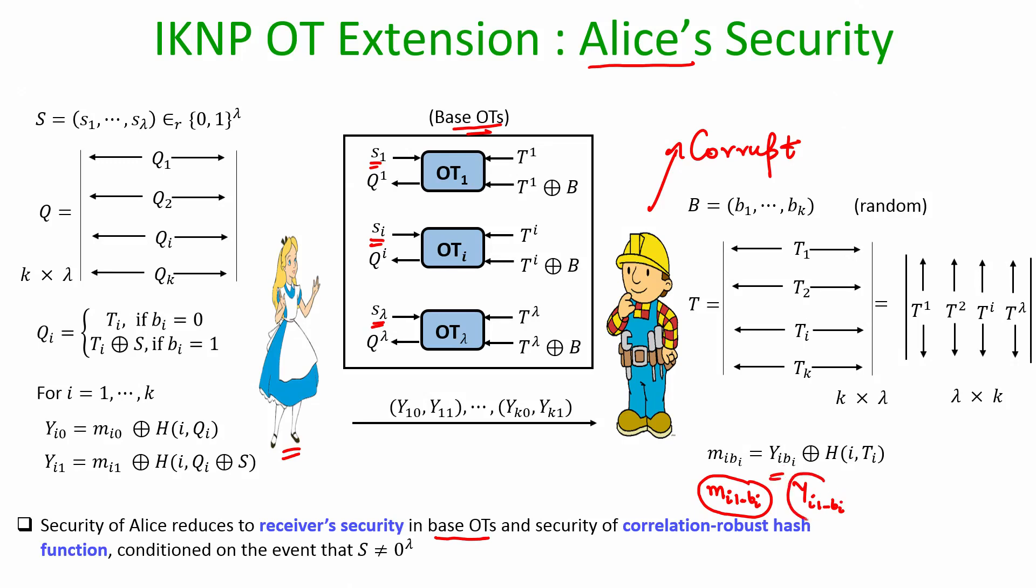But this other ciphertext is prepared using the pad TI XORed with S, and if S is hidden from Bob then the security of the correlation robust hash function H of TI XORed with S is like a random pad for the Bob. So if Bob does not learn anything about S and if S is a non-zero vector then we can simply base our Alice's security on receiver's security of base OT and the correlation robust hash function. Now, what is the probability that S is an all zero vector? Remember S is picked uniformly at random by Alice and the probability that is an all zero vector is 1 over 2 power lambda which is a negligible function in the security parameter.